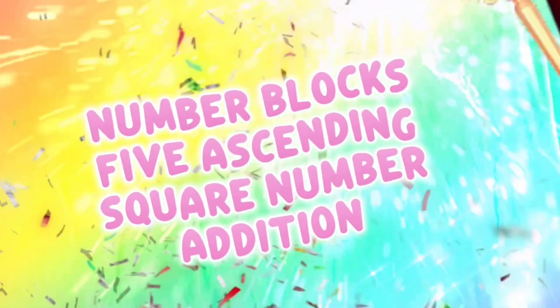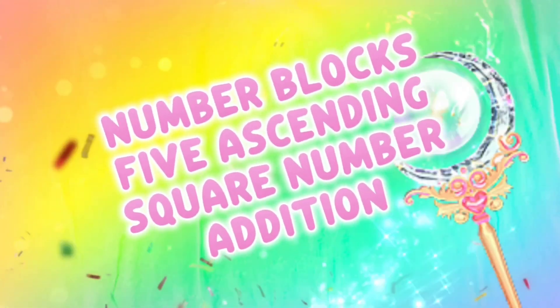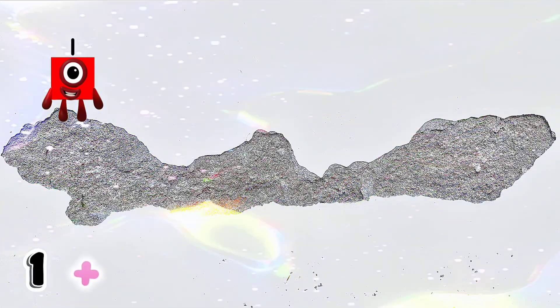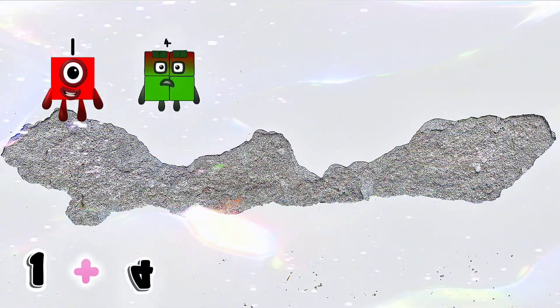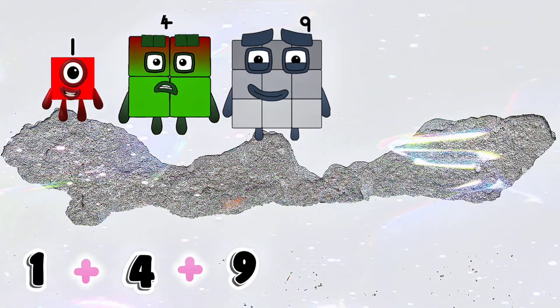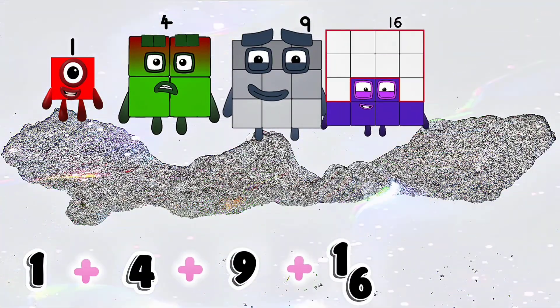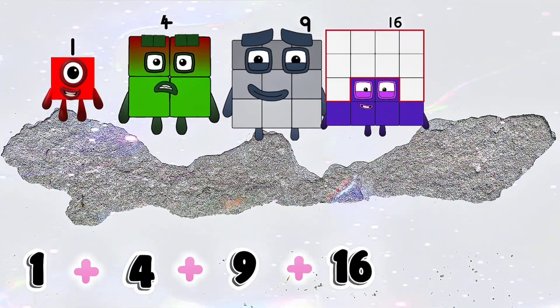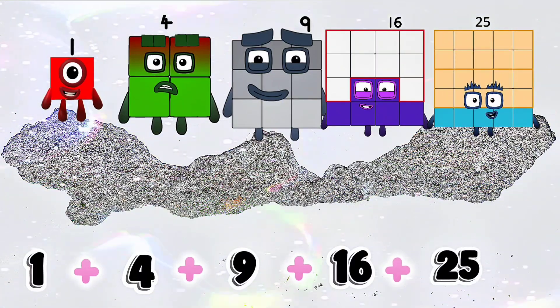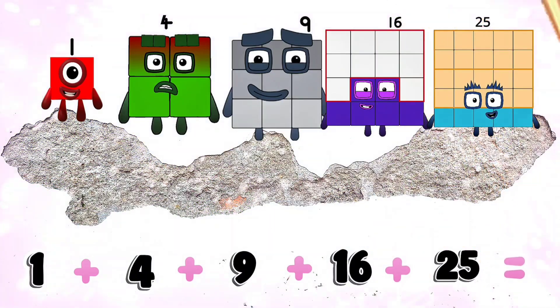Number blocks: 5 ascending square number addition. Let's go! 1 plus 4 plus 9 plus 16 plus 25 equals 55.